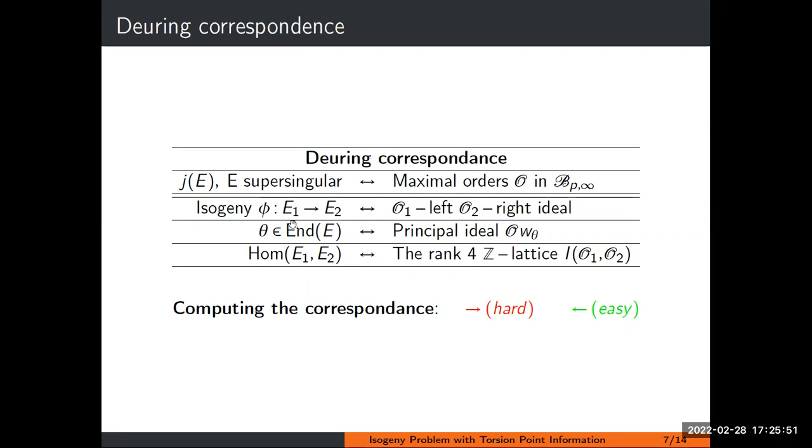An interesting algorithmic property of the Deuring correspondence is that it doesn't have the same difficulty in both directions. Computing the endomorphism ring of a supersingular curve is supposed to be hard, so there are only exponential time algorithms for this. But if one is given a maximal order, then one can compute the corresponding elliptic curve in polynomial time.